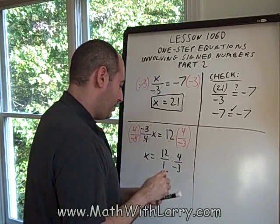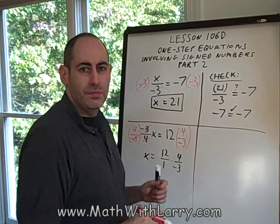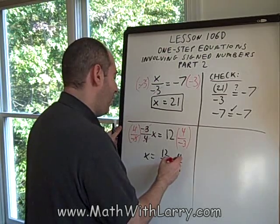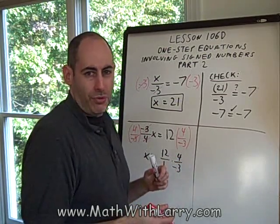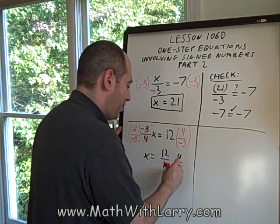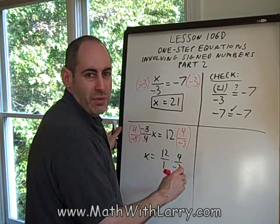Okay, now this gets a little bit tricky here. We want to do some cross-cancelling. The greatest common factor of 12 and 3 is 3. What I'm going to suggest to do here is I'm going to divide the 12 by 3 and the negative 3 by 3.